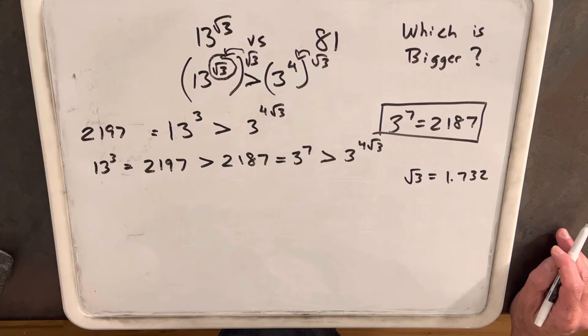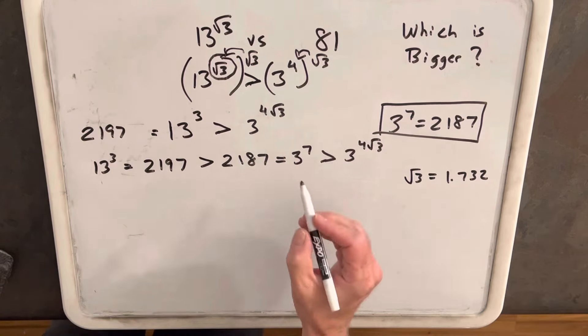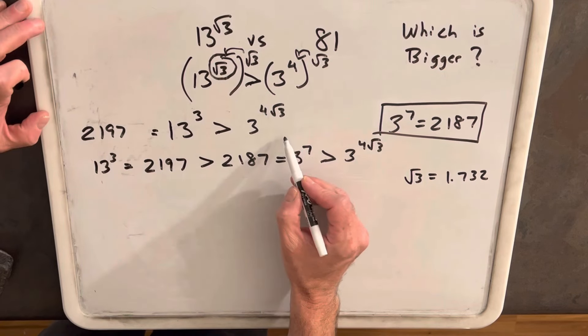But 4 times that is 6.9. Yeah, that's pretty close. So then what we've really done is we've now reduced our which is bigger problem to a simpler which is bigger problem.